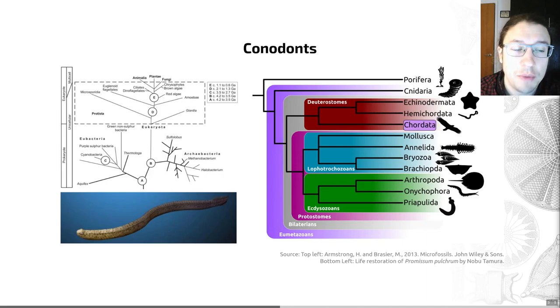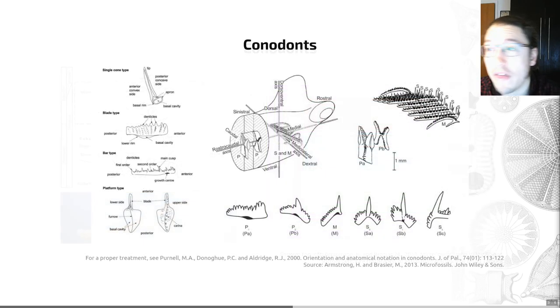They are typically found in marine near-shore deposits, so they're commonly found in, for example, black shales, and they're associated with things such as graptolites, radiolarians, brachiopods, and fish remains. So that is what they are and where they're found.